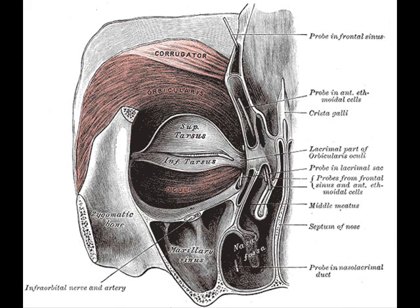The orbicularis oculi is the sphincter muscle of the eyelids. The palpebral portion acts involuntarily, closing the lids gently, as in sleep or in blinking. The orbital portion is subject to the will.